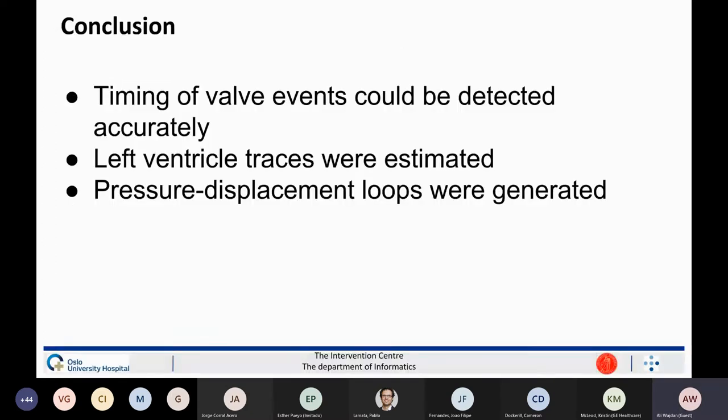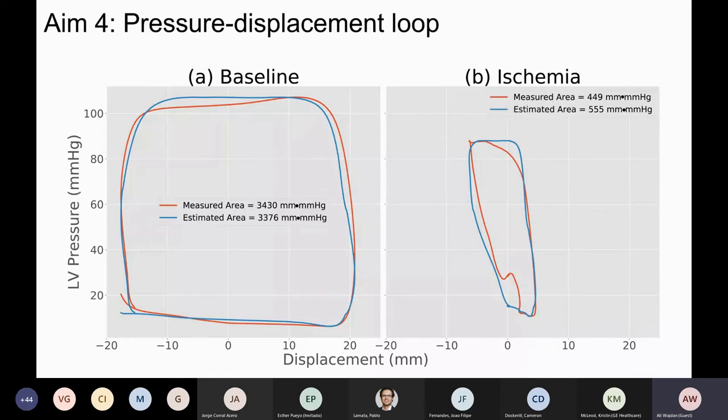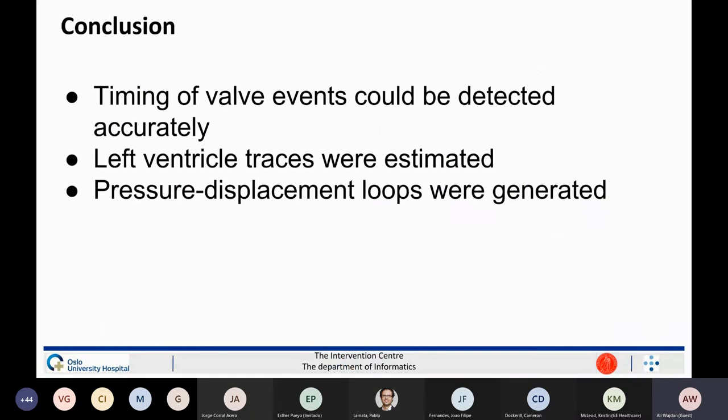So to conclude, we were able to detect the valve events with sufficient accuracy using our cardiac accelerometers. We were also able to estimate the left ventricular pressure trace using those detected valve events from the accelerometer. And finally, we could plot the pressure displacement loops in which the pressure was estimated again from the accelerometer and the displacement was also taken from the accelerometer. So in theory, the figure that I showed you in this previous slide, all the blue loops have been plotted using just the accelerometer, the cardiac accelerometer, and nothing else. So therefore, we believe that this method now enables extraction of new functional indices that were not possible before, and this does, in fact, improve the monitoring of the heart.